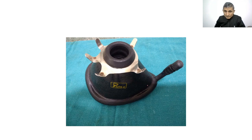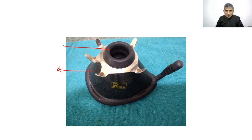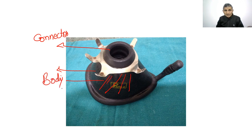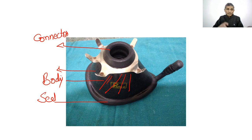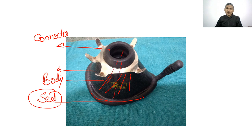This is an anatomical face mask used for adults. It has three parts: a connector that attaches to the breathing circuit, the main body, and the seal. When gases are delivered, the mask is applied over the mouth and nose; the seal forms a tight seal over the face to deliver gases to the patient.